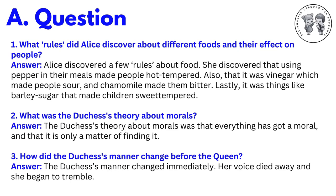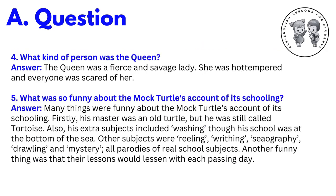Question number three: How did the Duchess's manner change before the Queen? Answer: The Duchess's manner changed immediately — her voice died away and she began to tremble. Question number four: What kind of person was the Queen? Answer: The Queen was a furious and savage lady — she was hot-tempered and everyone was scared of her. Question number five: What was so funny about the Mock Turtle's account of its schooling? Answer: Many things were funny — firstly his master was an old turtle but was still called Tortoise; also his extra subjects included washing, though his school was at the bottom of the sea.